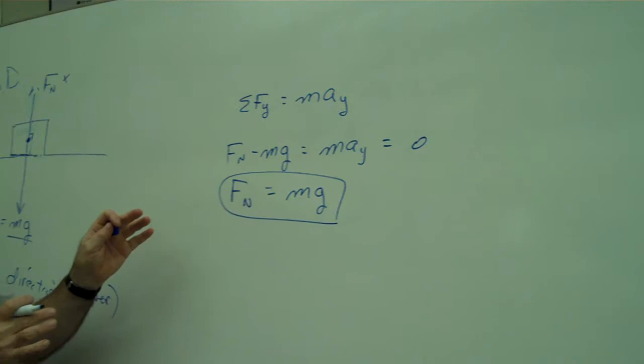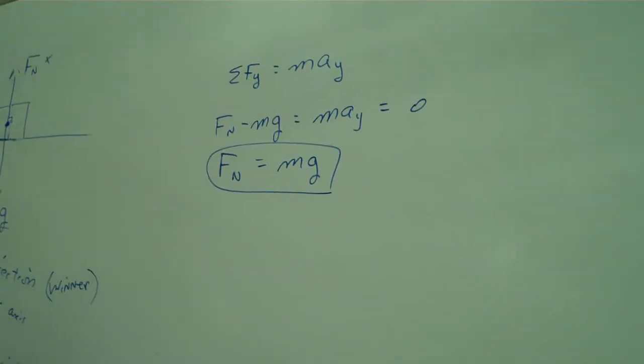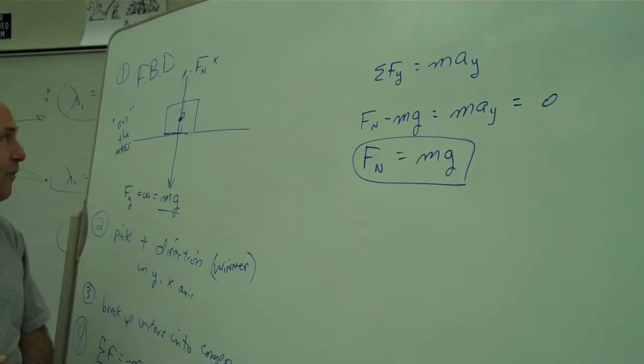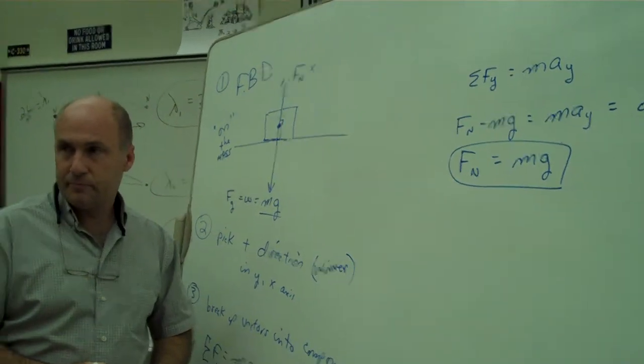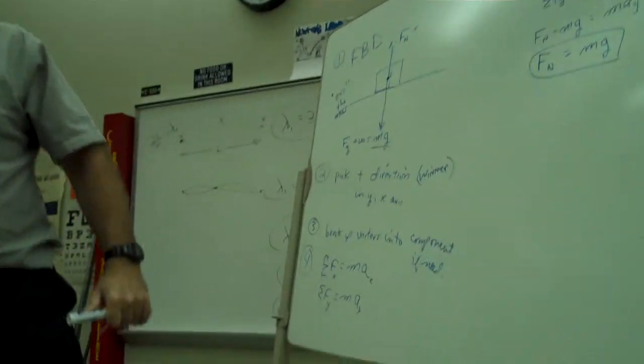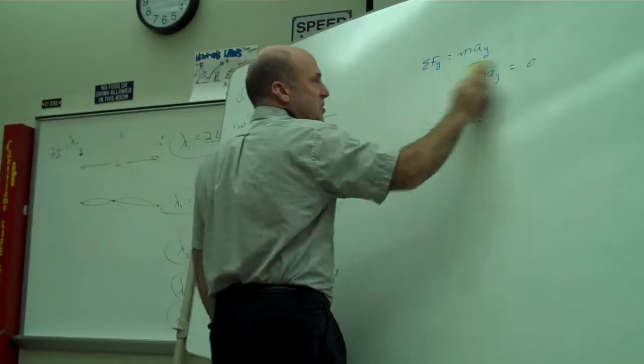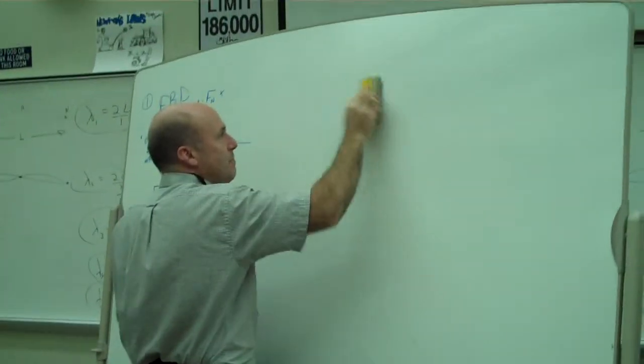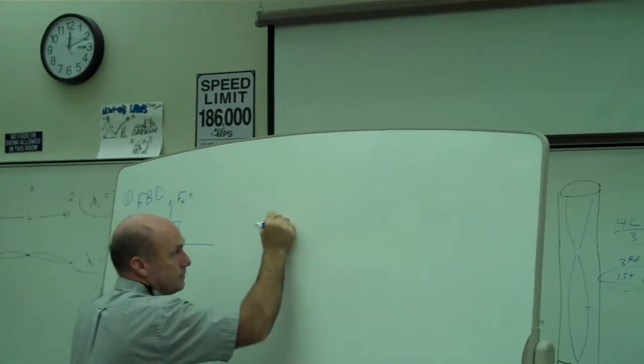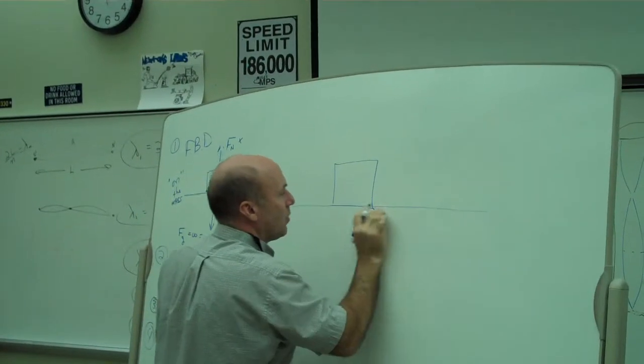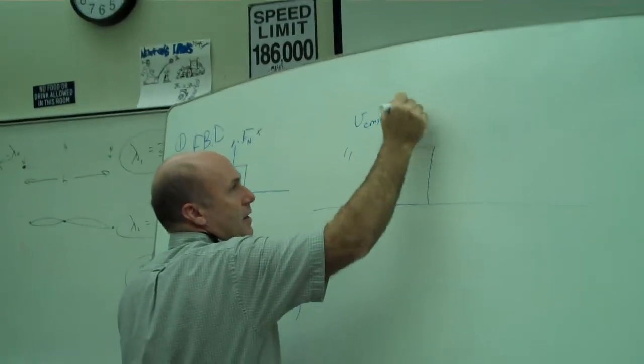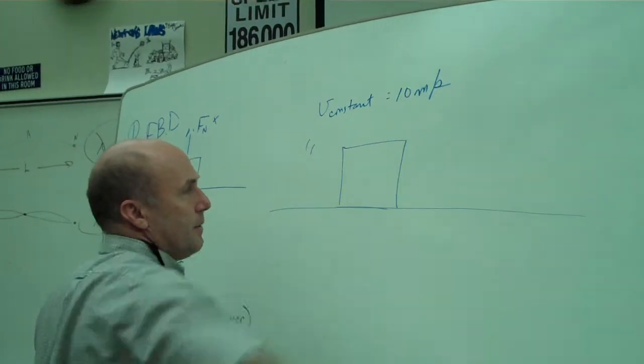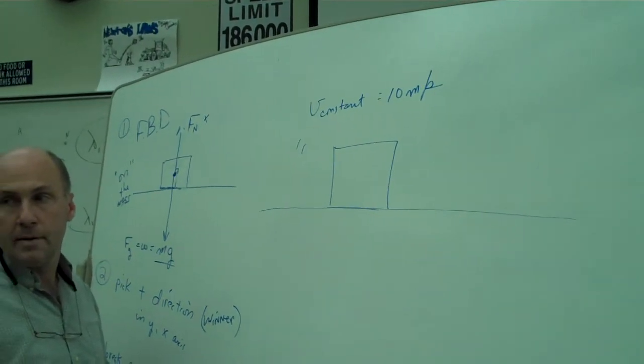Now, that was in the shallow end, blowing bubbles. Ready to kick your feet a little bit now? So let's try this all over again. But this time, let me give you another question. And I want you to draw the free body diagram for it. A mass is on a horizontal surface moving at a constant speed. Do you hear that? Moving at a constant speed of 10 meters per second.